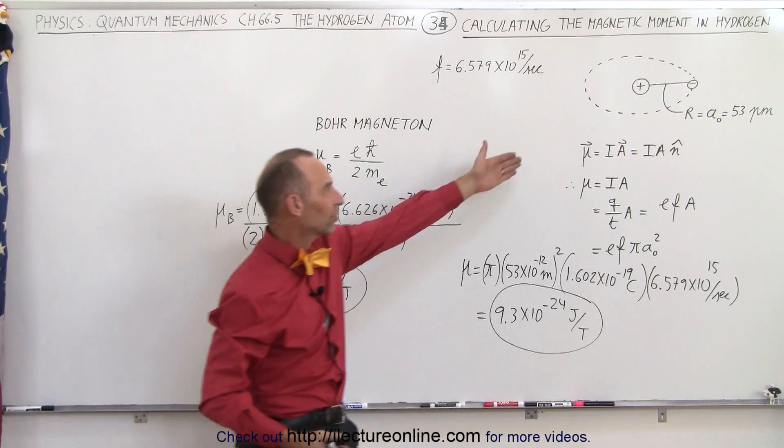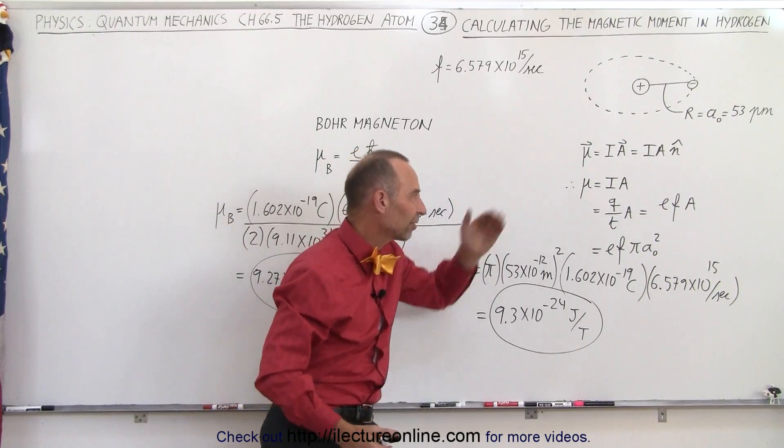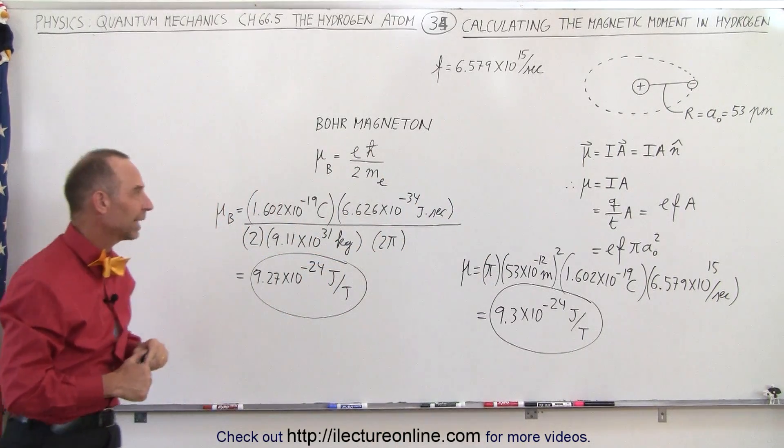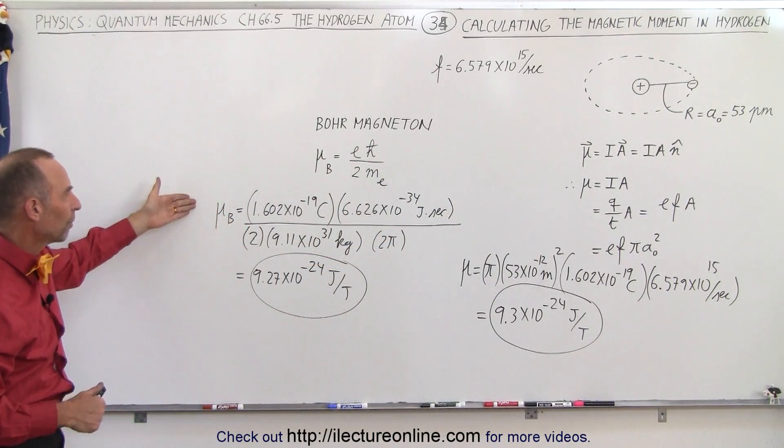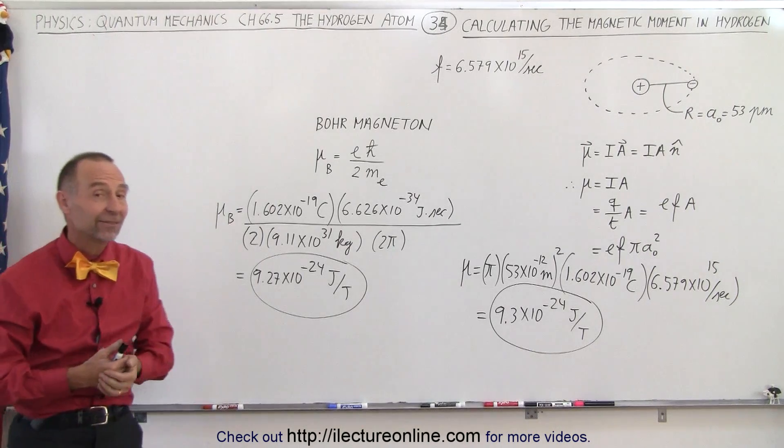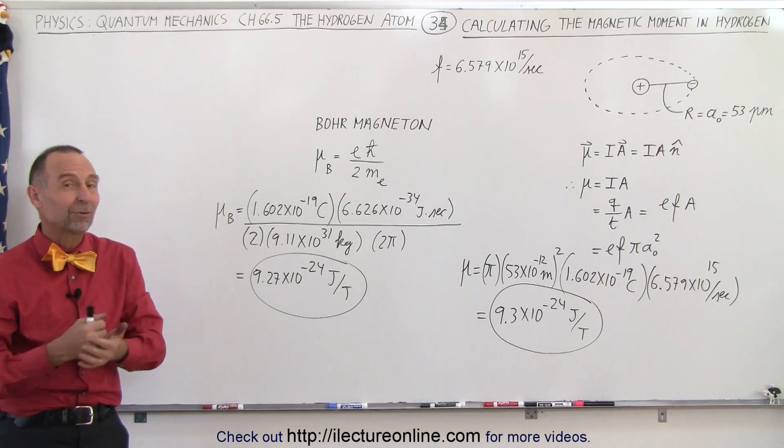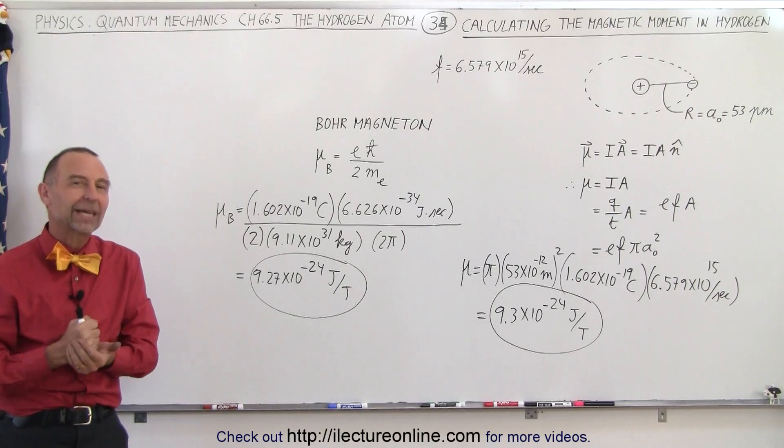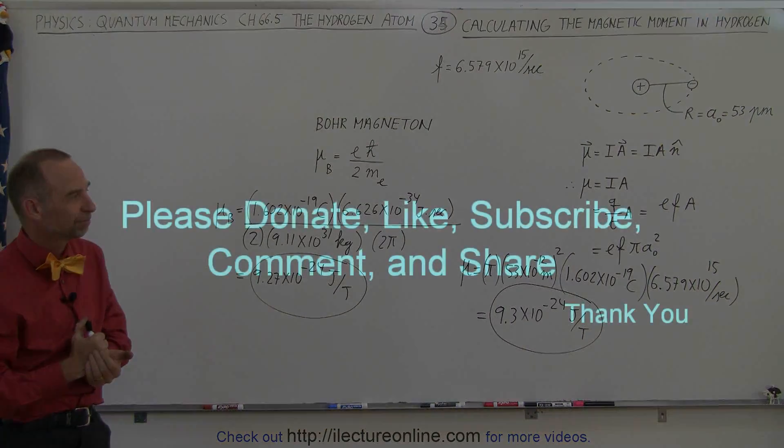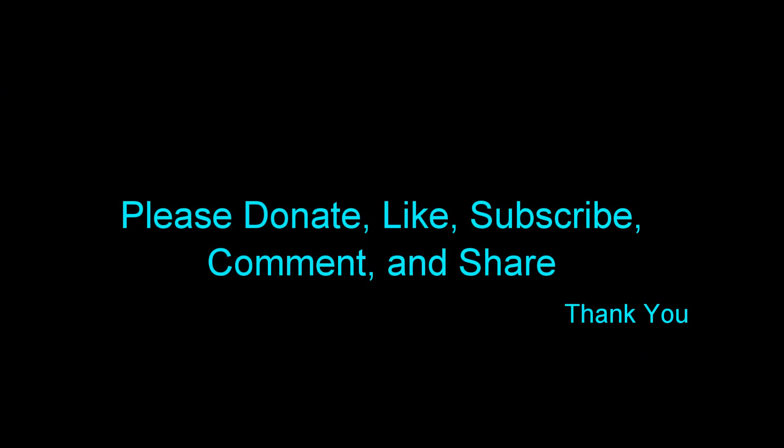We can either use the classical terms and the classical concept of a magnetic moment. Or we can use the Bohr magneton equation and we get the same result. And that's how it's all tied in with the classical mechanics as well.